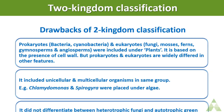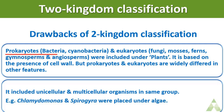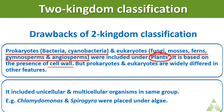The drawbacks were that prokaryotes — including bacteria and cyanobacteria — and eukaryotes consisting of fungi, mosses, ferns, gymnosperms, and angiosperms were all included under kingdom Plantae. This was based on the presence or absence of cell wall: those with a cell wall were considered plants. But prokaryotes and eukaryotes differ widely in other features.